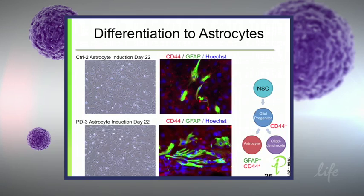This is our protocol to differentiate into astrocytes. After day 22 in astrocyte induction media, we see CD44-positive cells, which is a glial progenitor marker, and we also get GFAP.